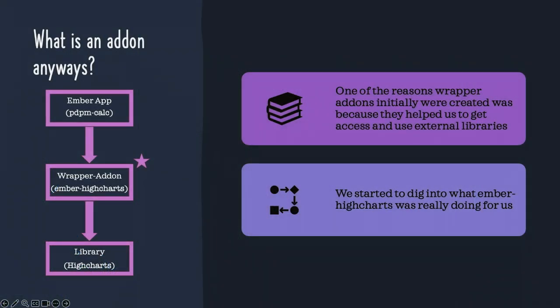Thinking about these drawbacks, we started to dig into what this wrapper add-on was actually doing for us — and what is an add-on anyway? There are three layers of abstraction here: our Ember app (the PDPM calculator), the middleman wrapper add-on called Ember HiCharts, and then the actual library we're trying to use — HiCharts itself. Wrapper add-ons were initially created to help get access to third-party libraries, acting as a layer of glue. They can be very useful, but they can also be difficult to customize.